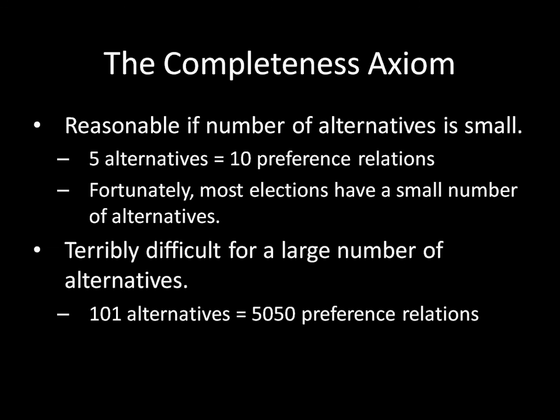The problem is when you have a large number of alternatives. If we bump up the number of alternatives to 101, then there are now 5,050 preference relations. If you were voting in an election where all 300 million people in the United States were eligible candidates, there's no way your preference relation would be complete — you'd have no idea about a lot of pairs. So that's when you run into problems with completeness when there are a large number of alternatives. For the types of elections we're interested in, this isn't too difficult because the number of alternatives we'll be looking at tends to be pretty small.